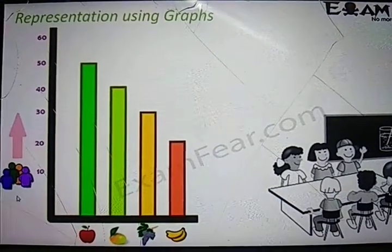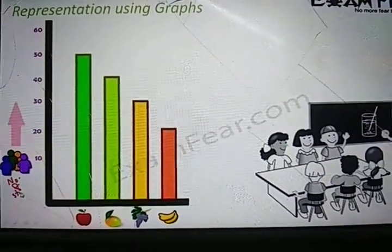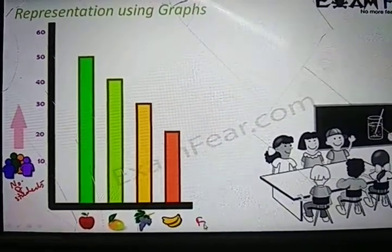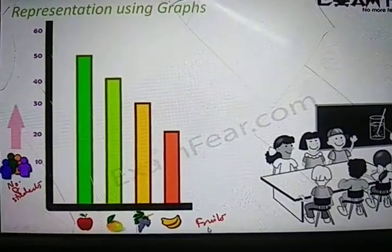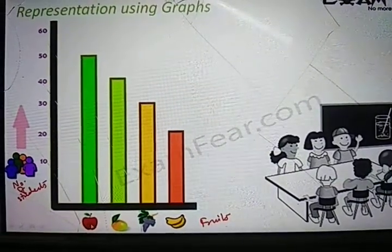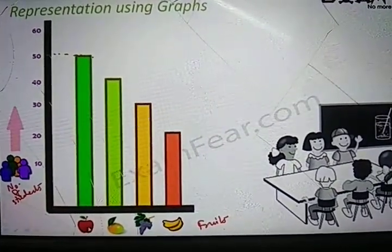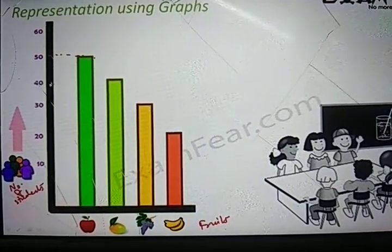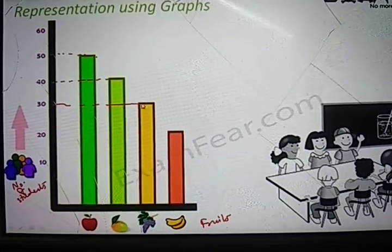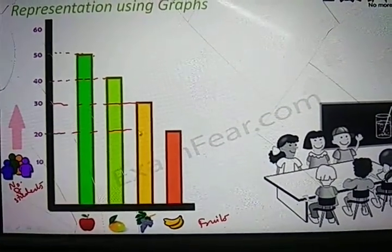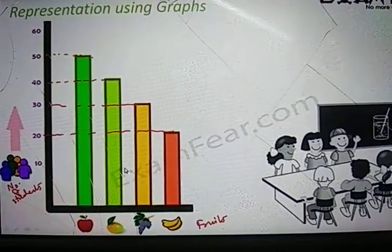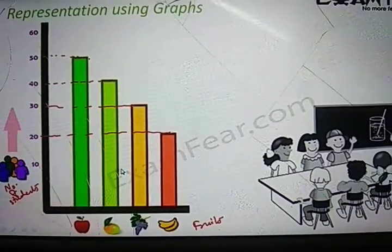Basically, the number of students is one variable and the other quantity is the fruits. With the help of these two quantities — the number of students and the fruits — taking these two different axes, we have plotted a graph. Now with this graph, you can very easily determine how many students like apples. Here you can see that 50 students like apples, around 40 students like mango, 30 students like grapes, and 20 students like banana. With this graphical representation, it becomes easier to display the entire data.